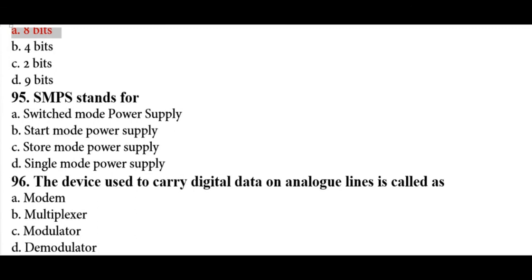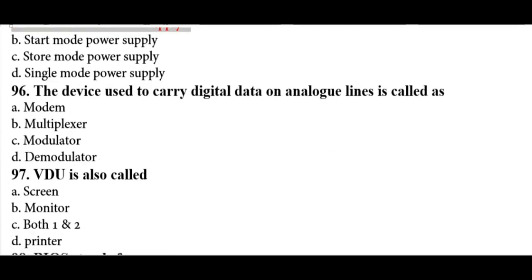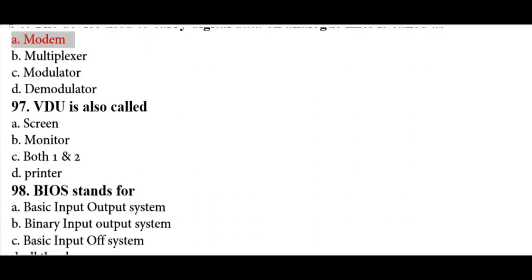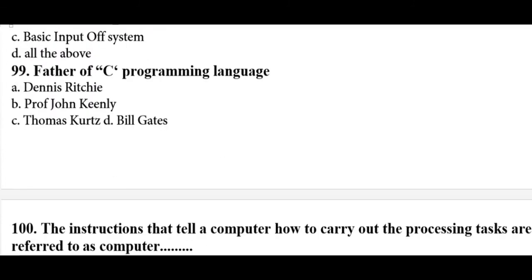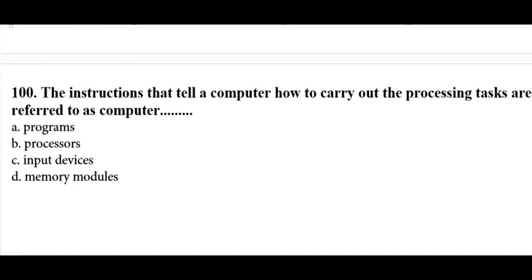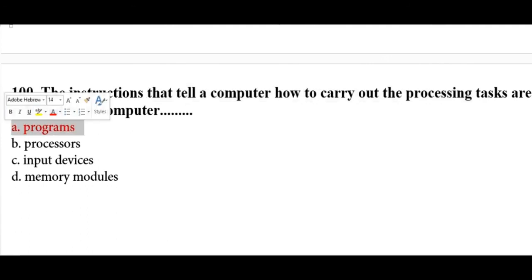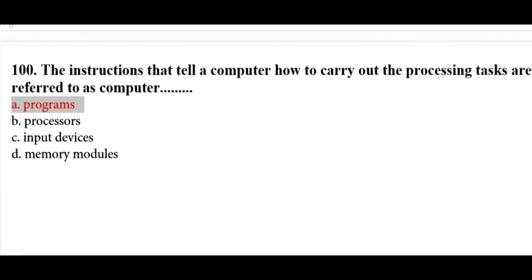An interpreter translates and executes a program at run time, line by line. The OOP (Object-Oriented Programming) principle uses inheritance. COBOL is widely used in commercial applications. RAM stands for Random Access Memory. One byte equals eight bits. SMPS stands for Switched Mode Power Supply. A modem carries digital data over analog lines. VDU is also called a monitor. BIOS stands for Basic Input/Output System. The father of C programming is Dennis Ritchie. Instructions that tell a computer how to carry out processing tasks are referred to as programs.